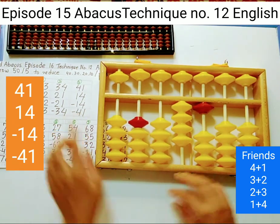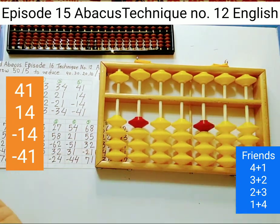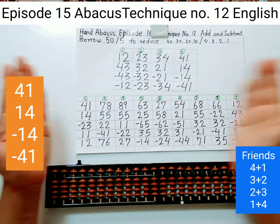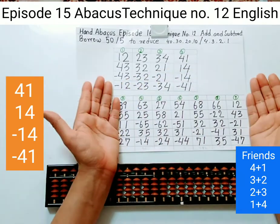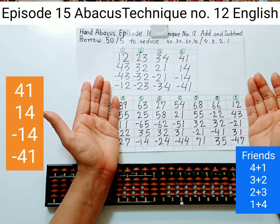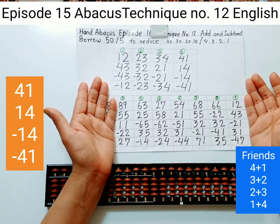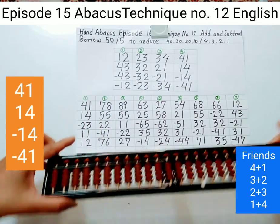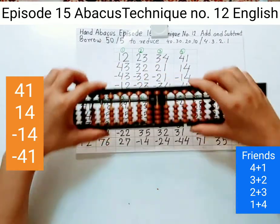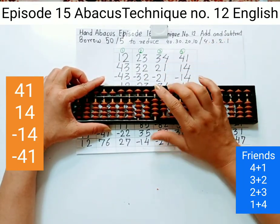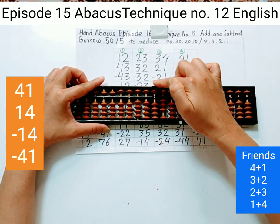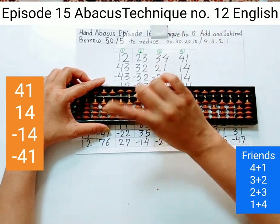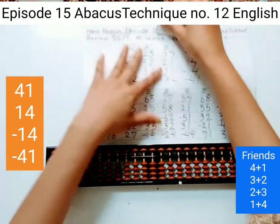Let's do these exercises with this hand abacus. I'm going to explain only two questions and the rest of these questions are for your exercises — please do them by yourself. If you have any confusion or comments, please comment and I will definitely answer. Be careful about your finger process: to move beads up, use your thumb; for all other movements — beads down, beads up — use your pointer finger. Let's start number one.